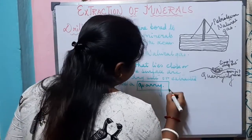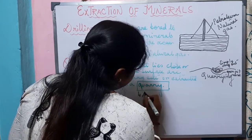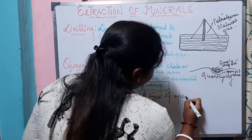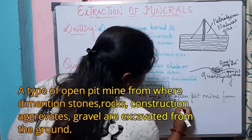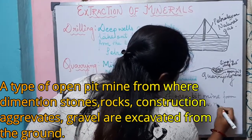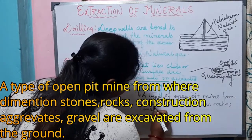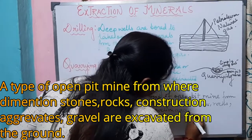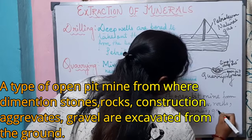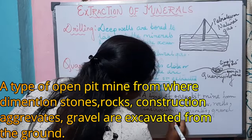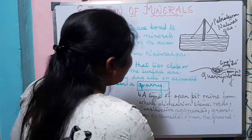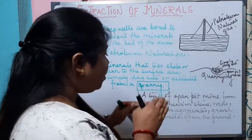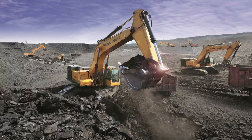A quarry is a type of open pit mine. In simple terms, by removing the ground — the stones, rocks, and construction aggregates — we can extract the minerals which lie very close to the surface. This process is called quarrying.